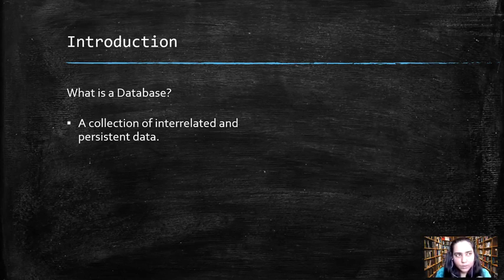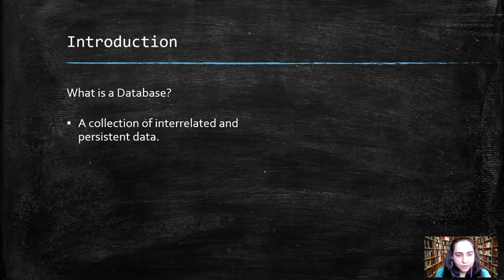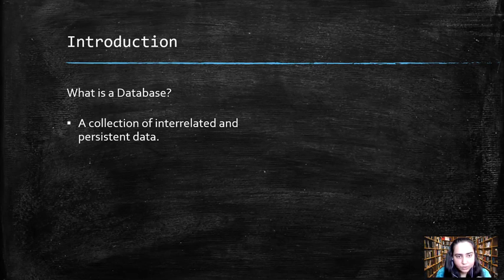When you look at it, you can get the whole picture of what kind of a database it is. So that is interrelated. Then we have persistent. Persistent means data that does not get destroyed or deleted once it is stored. It has to remain in the system for as long as the person who stored it wants it.